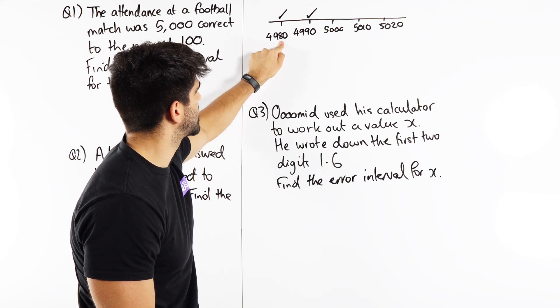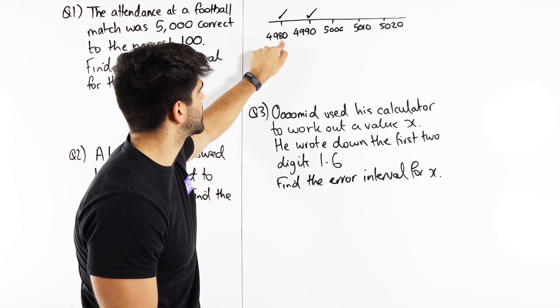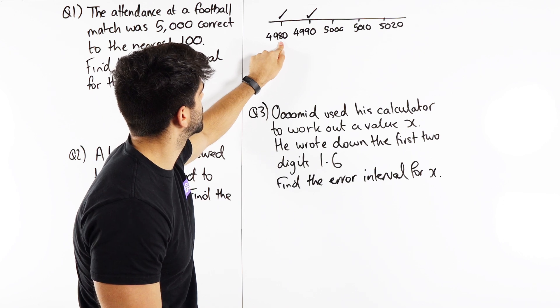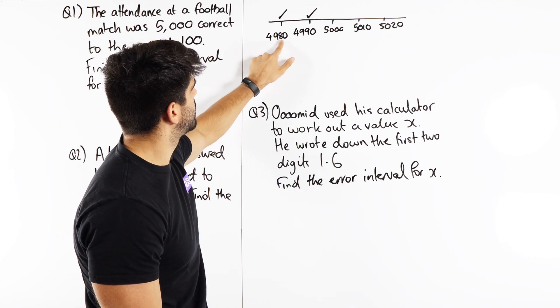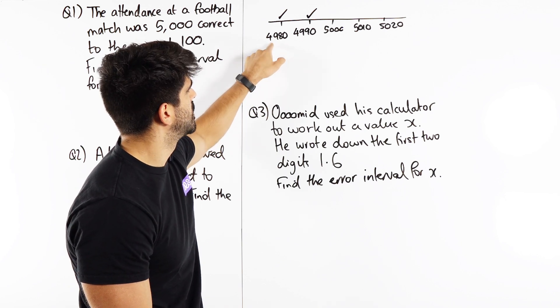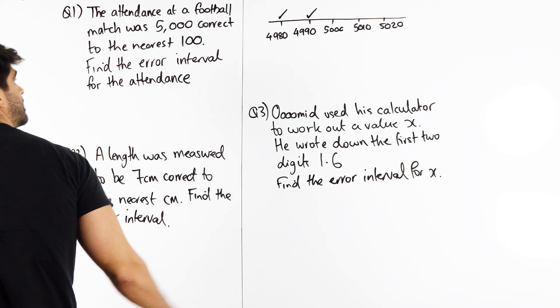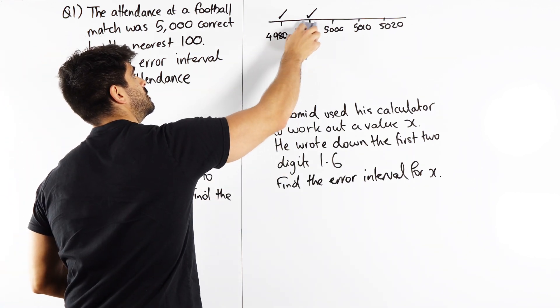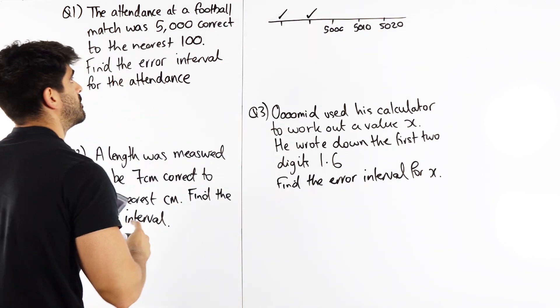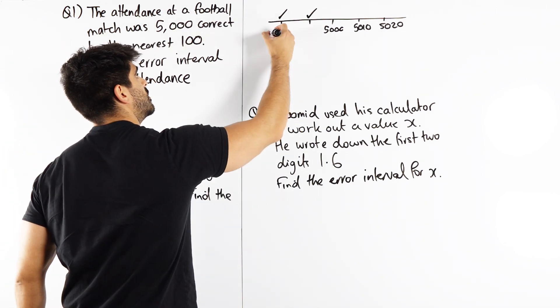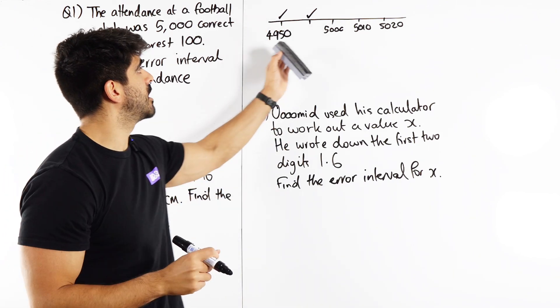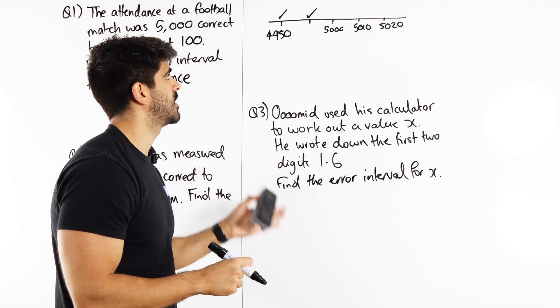7 will work yeah 7 is going to round that up. 6 is going to work it's going to round it up and 5 is going to work it's going to round it up. 4 will not work. 4940 the 4 is going to keep that down to 4900. So we can keep going over here until we get to 4950. Okay so all the numbers in between will round to 5,000 to the nearest hundred.